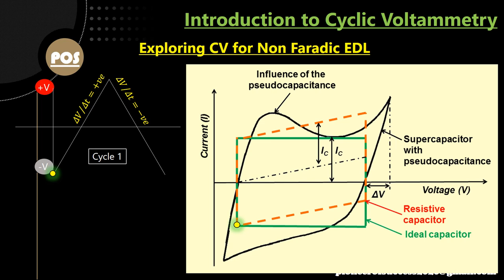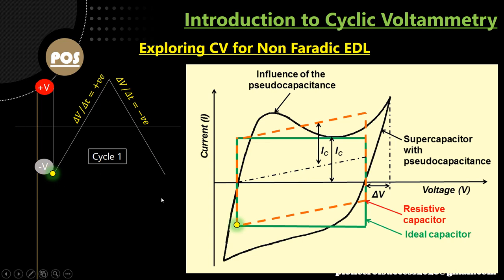Let us initially start with a basic cyclic voltammogram for an ideal capacitor. If we take an ideal capacitor from an electronic circuit and put it across the cyclic voltammogram — like if you just put those two ends across the reference and working electrode — then you will be getting a cyclic voltammogram like this. In a cyclic voltammogram, the voltage varies from a negative value to a positive value and then again comes back to the initial negative value, basically forming a triangular kind of wave. If I show the animation for an ideal capacitor, this diagram will show the voltage variation and we will see the current variation. For a cycle, the current varies as a rectangle.